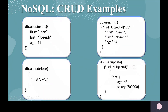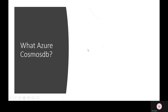For a NoSQL CRUD example: to insert a document into a collection, you use db.users.insert — where 'users' is the collection name. You can also put expressions to delete or use conditions to find records. To update, for example, you can set a field like age to 45 and increase the salary.